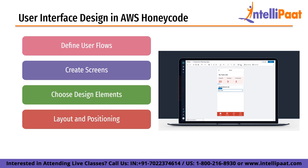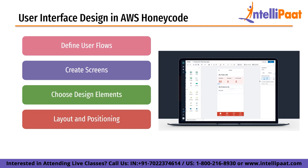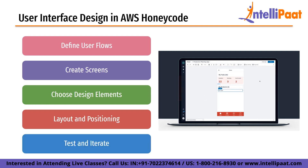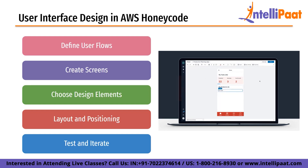Next is layout and positioning. After choosing the design elements, the next step is to layout and position the elements on each screen, including arranging the input fields, buttons and other controls in a logical and easy to use manner. Screens should be designed with the user's needs in mind. The last step is to test and iterate. After the screens are designed, the next step is to test the UI with users and iterate based on their feedback. User testing can help identify usability issues, and iterating based on feedback can lead to a UI optimized for the user's needs and preferences.